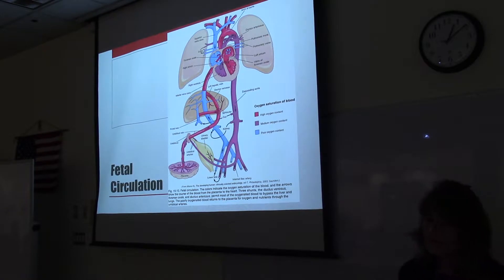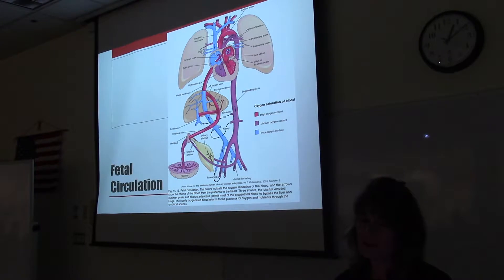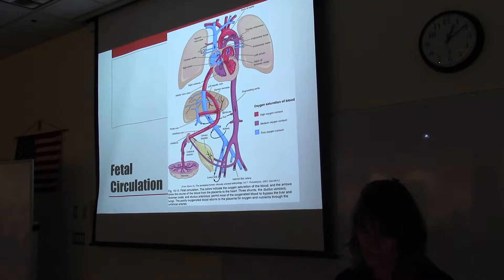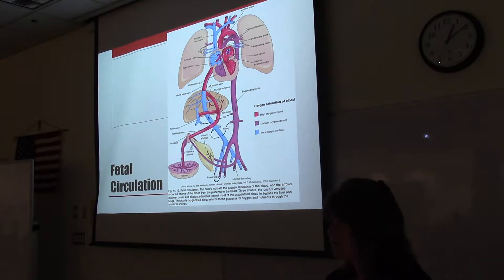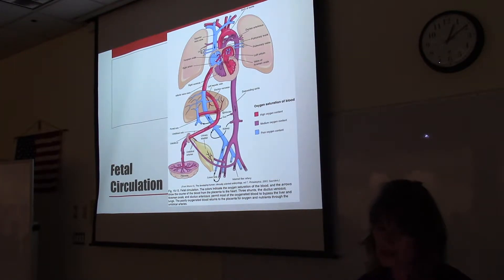Let's review fetal circulation. In utero when the fetus is developing, the blood flow is different than adult circulation. Blood flows down the aorta and goes into the femoral artery and the iliac artery, and that goes into the umbilical artery. Blood will then travel to the placenta to get rid of carbon dioxide, pick up oxygen, and pick up nutrients. And then the blood will flow back to the heart, to the right side of the heart.